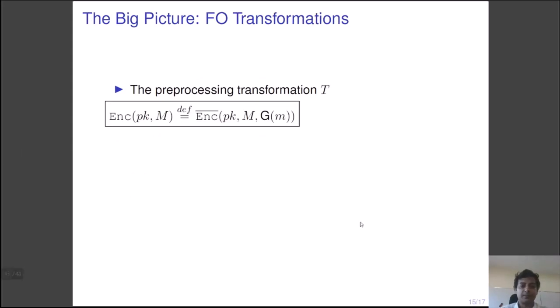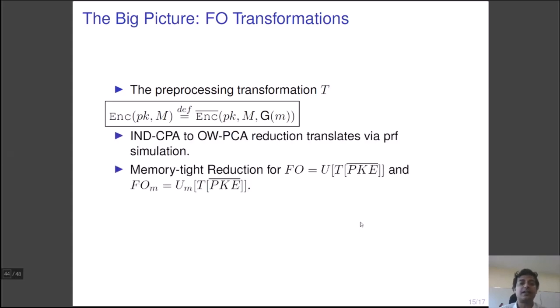So finally, we come to the big picture, the full Fujisaki-Okamoto transformations. We note that in the modular analysis of Fujisaki-Okamoto transformations, there is a pre-processing transformation as well, namely T, which fixes the random coin used in an encryption scheme by evaluating the message m by a random oracle. The IND-CPA to one-way PCA reduction translates via PRF simulation perfectly. This gives memory tight reduction for two variants, namely FO and FOM, where there are implicit rejections. However, we see that the transformations U part and UM part require verification oracle. In the paper, we introduced another module called V for which we could show a memory tight reduction from one-way PCA to one-way PCVA security.